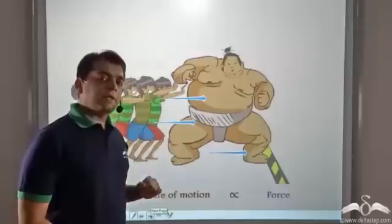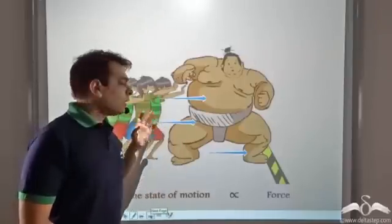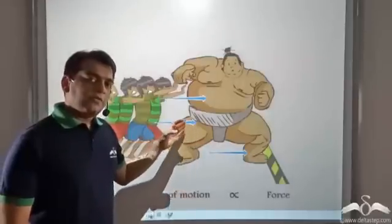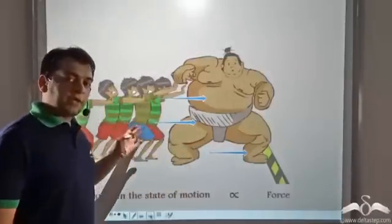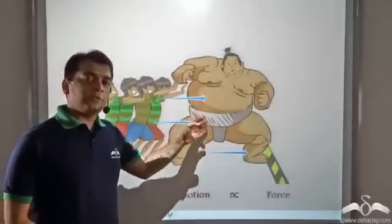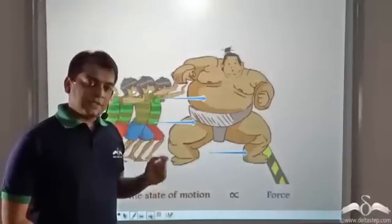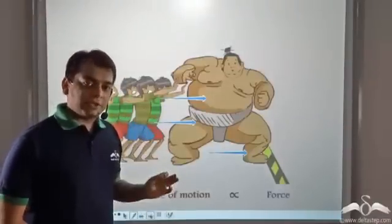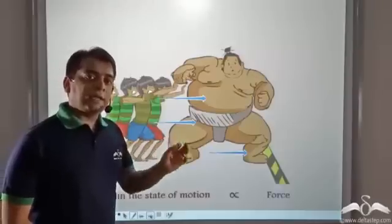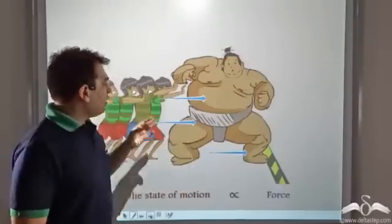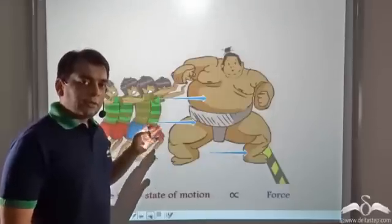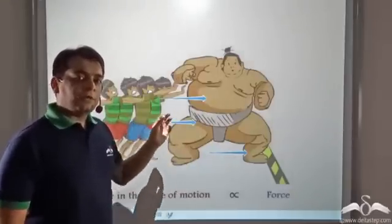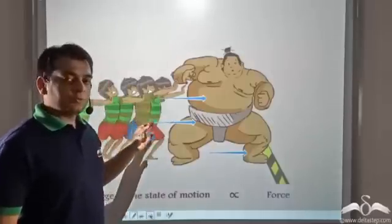So what happened here? Why was it that the boy alone was not able to push the sumo wrestler, whereas a group of boys together were able to move the sumo wrestler a little bit? We have studied that when forces act in the same direction, their magnitudes add up. Hence, when the group of boys were pushing together, the magnitude of that force was greater than the magnitude of the force when the boy was pushing alone.